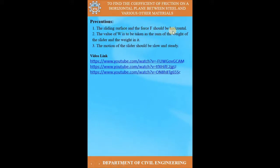For precautions: the sliding surface should be horizontal — ensure the steel base of the slider is level. The value of W is taken as the sum of the weight of the slider and any additional weight placed on it. If a small weight causes the slider to move, you need to increase the weight of the slider by placing additional weight on top of it, and W will represent the summation of those weights. The motion of the slider should be slow and steady.